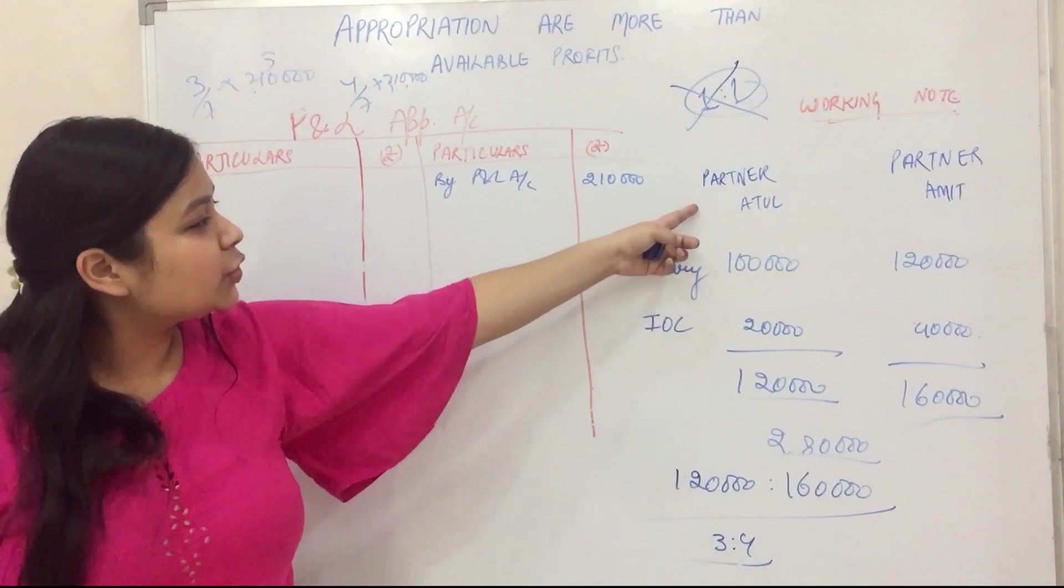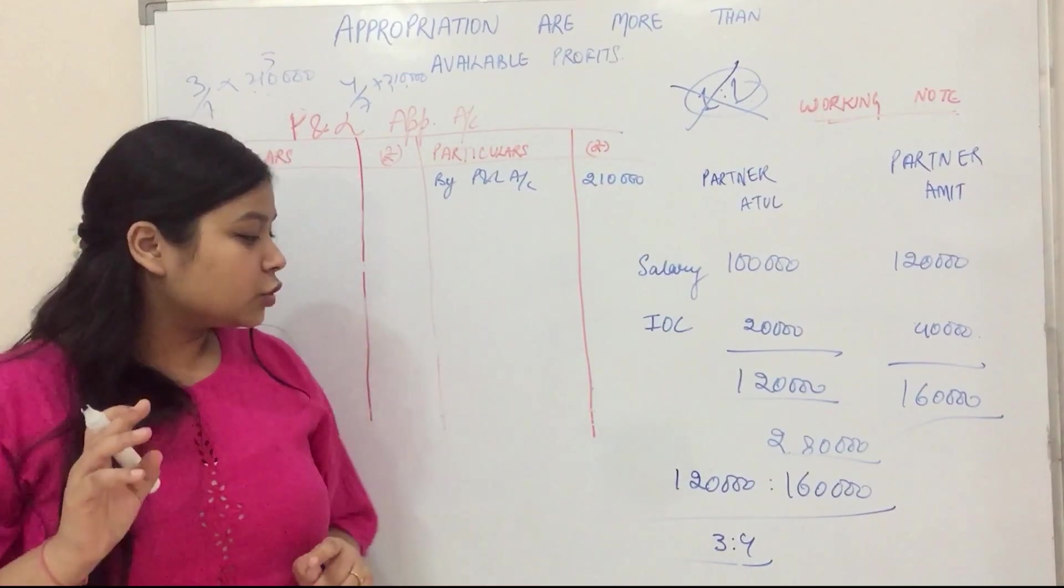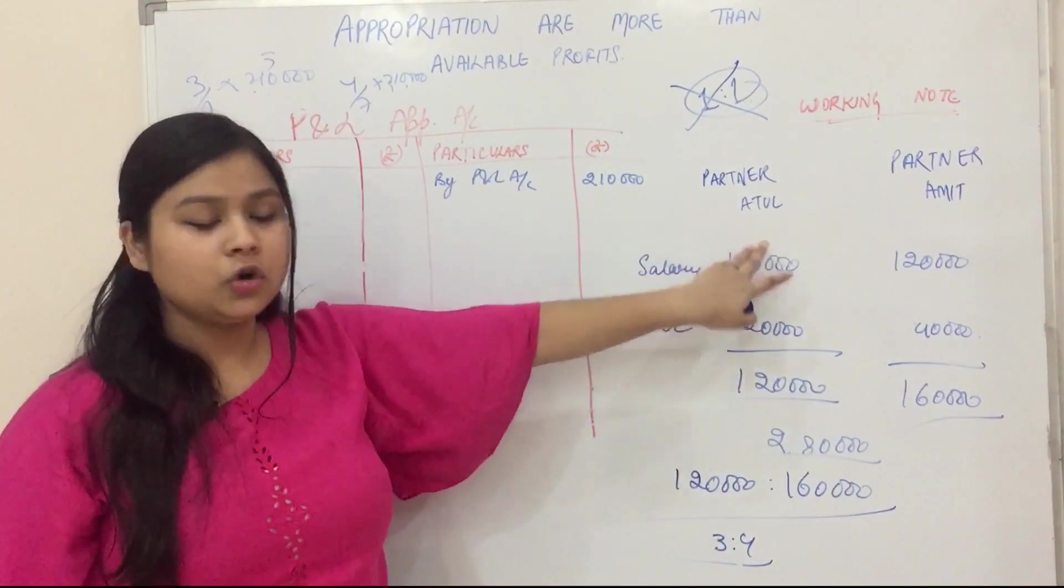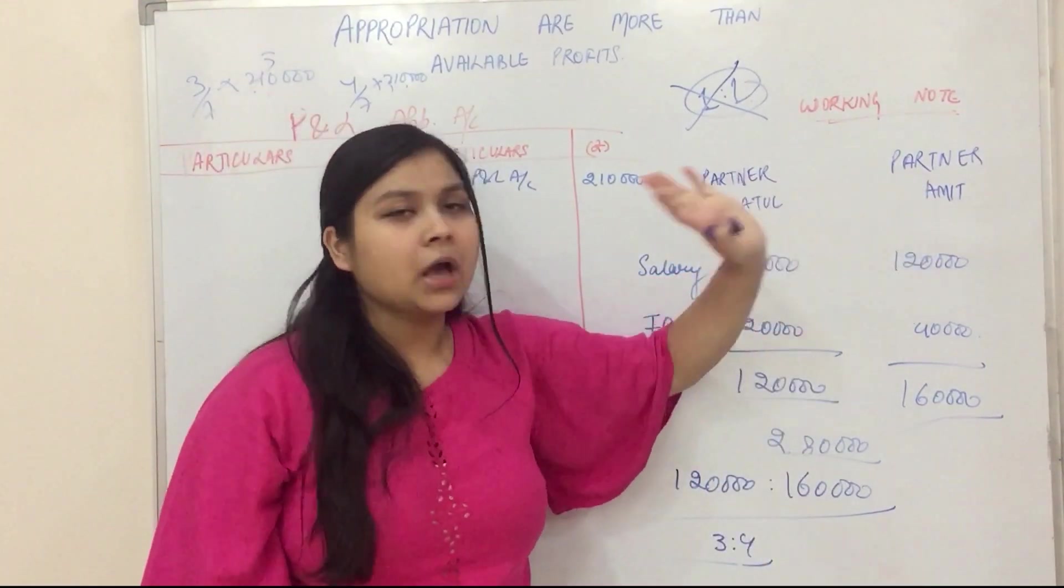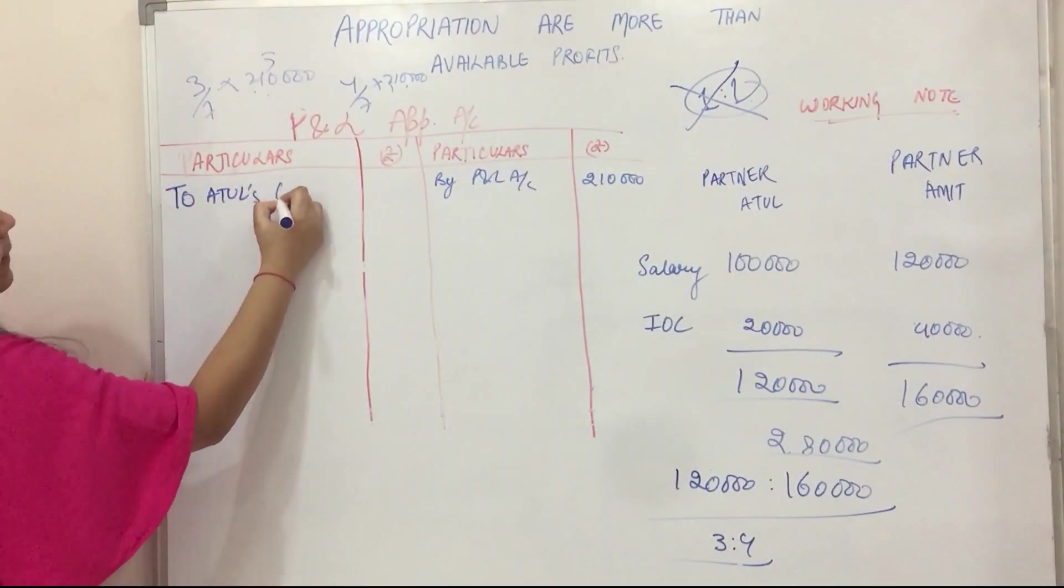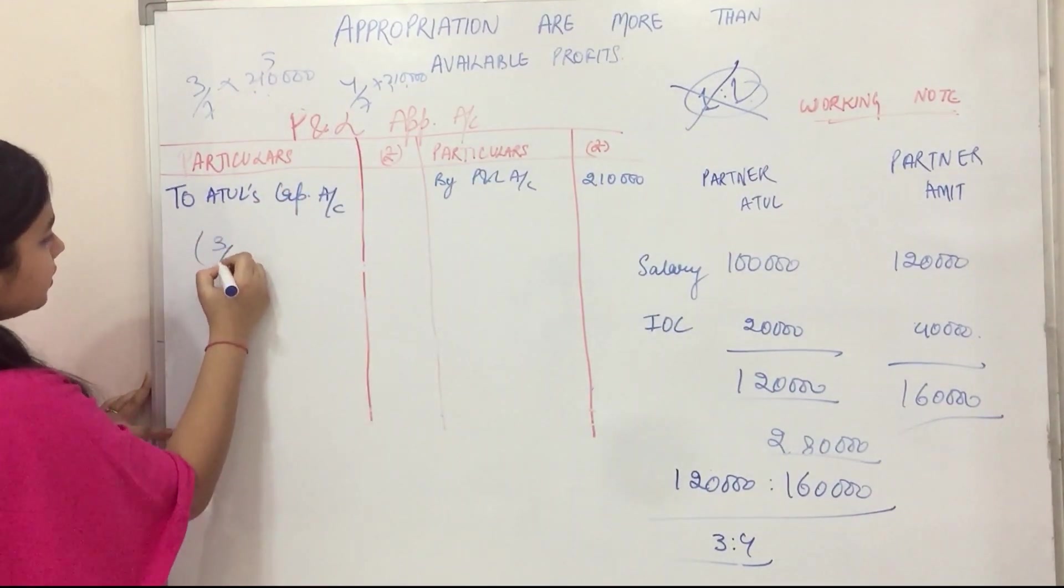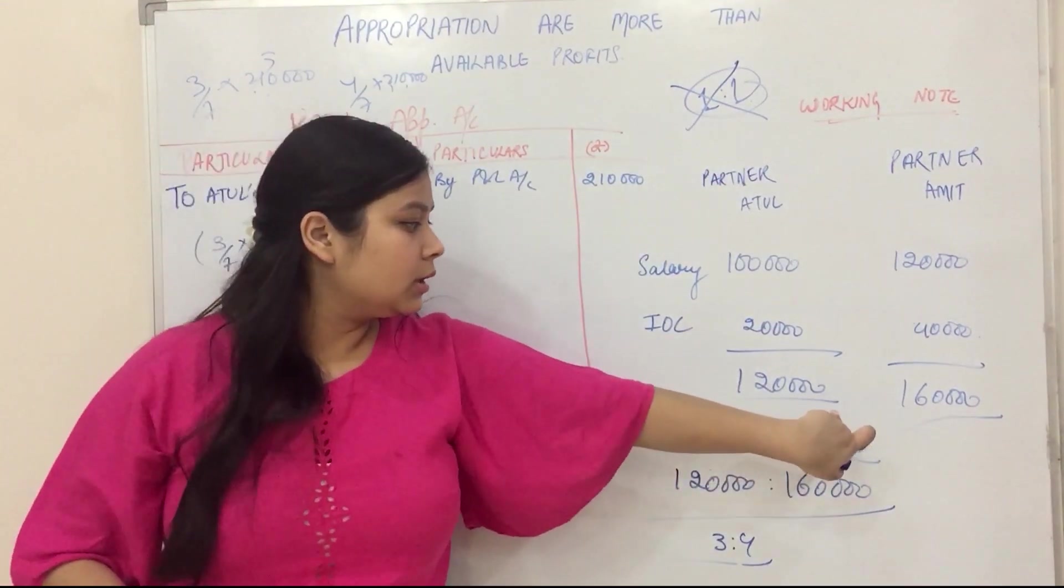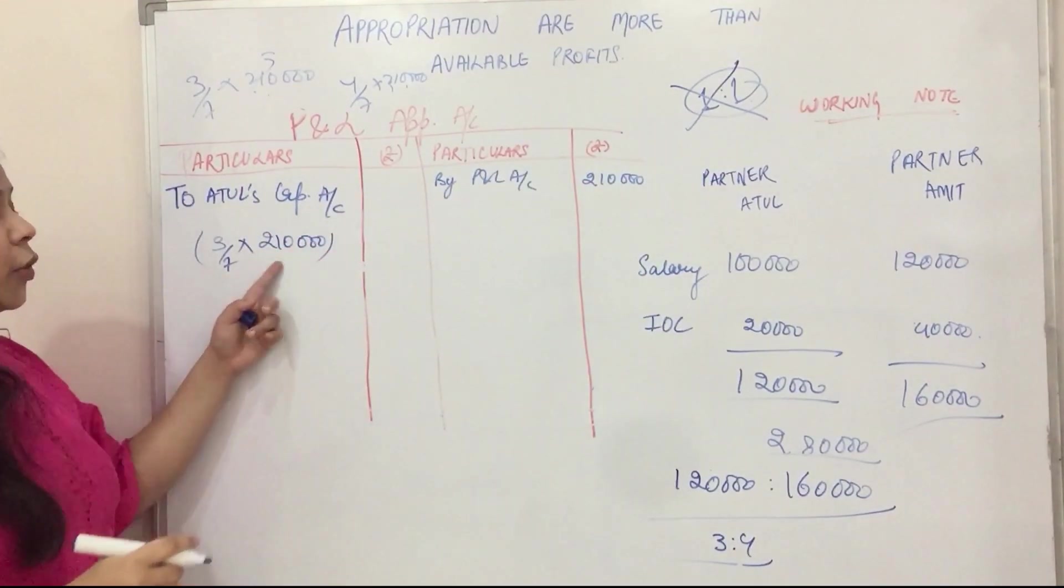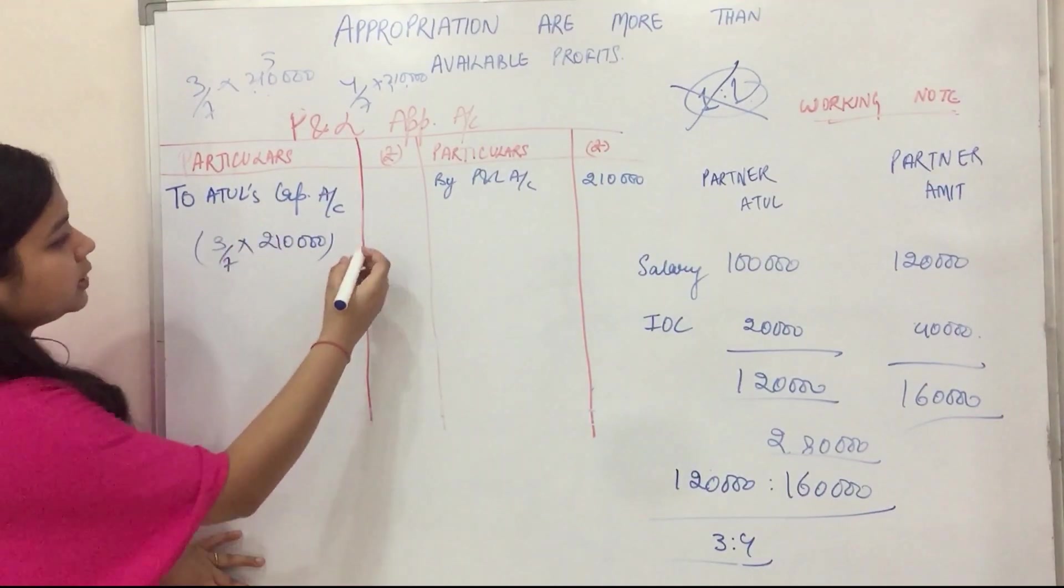Profit distribute appropriation 3 to 4. If I have 7 candies then 3 candies will go to Atul and 4 candies will go to Amit. So Atul's capital account, what happened? 3 by 7 of our profit. Our profit is 2,10,000. So 3 by 7 we will give Atul which is 90,000.